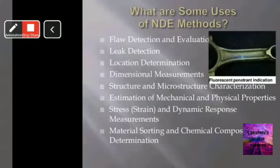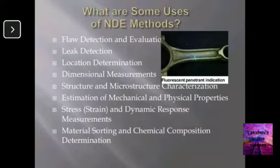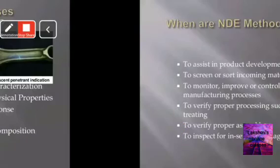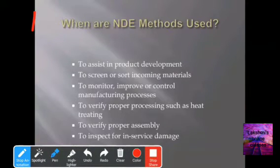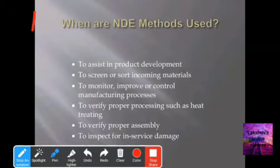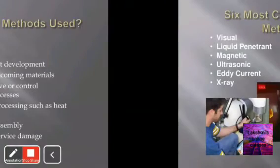These are the different NDT methods and their uses. When these methods are used, we follow certain steps: to assist in product development, to screen or sort incoming materials, to monitor, improve or control manufacturing processes, to verify proper processing such as heat treating, to verify proper assembly, and to inspect for in-service damage.